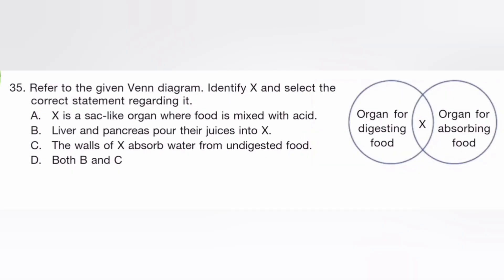Refer to the Venn diagram. Identify X and select the correct statement regarding it. The answer is B, liver and pancreas pour their juice into X.